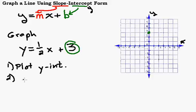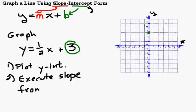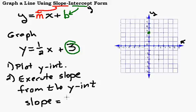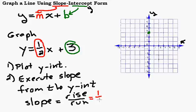Step number 2 is to execute your slope from the y-intercept. Let's remember what slope means. Slope means rise over run. The slope of our line, the m value, is whatever is being multiplied by x. So in our case, it's 1/2. That's our slope. So that is our rise over run. So we're going to rise 1, run 2. And we do that from the y-intercept.